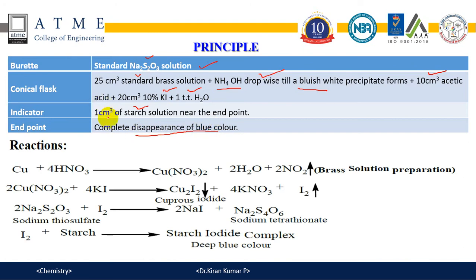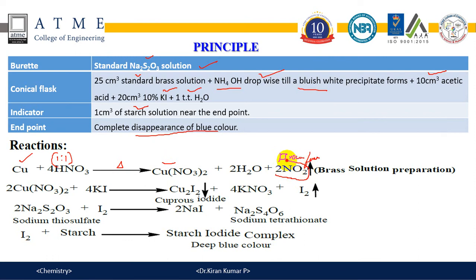The brass solution is prepared by weighing a known weight of brass. 1:1 HNO3 is added. On heating, the brass dissolves and forms copper nitrate. During the reaction, there is evolution of brown fumes due to expulsion of oxides of nitrogen, which is toxic. In order to remove the oxides of nitrogen, we add about 1 gram of urea, which destroys them.